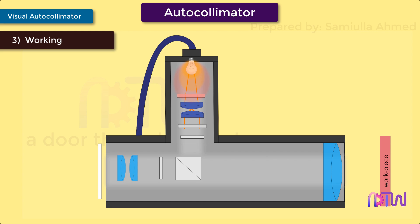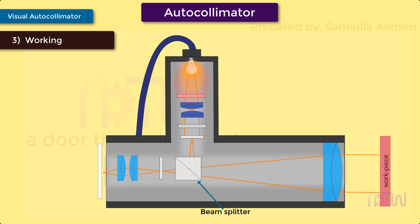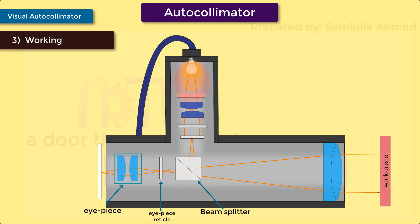After passing through the diffuser, the beam of light passes through the objective reticle and then falls onto the beam splitter. Here the beam of light splits into two and gets projected on both sides. The beam traveling on the left-hand side passes through the eyepiece reticle and eyepiece lens. On the other hand, the beam traveling on the right side passes through the objective lens and falls on the plane reflector.